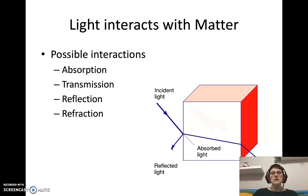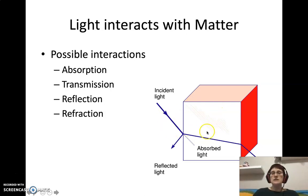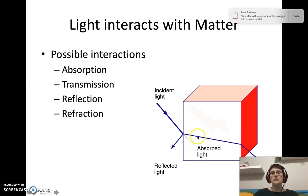There is another type of interaction: refraction. Refraction is what happens when you get a change in material — when light travels from air into another material, for example. It is essentially the bending of light. You can see that the light doesn't exit the object at the same exact angle it entered — we'll talk about this in a lot more detail later.